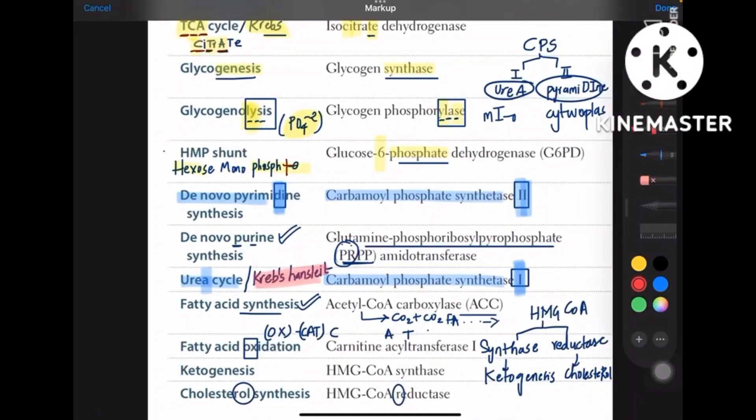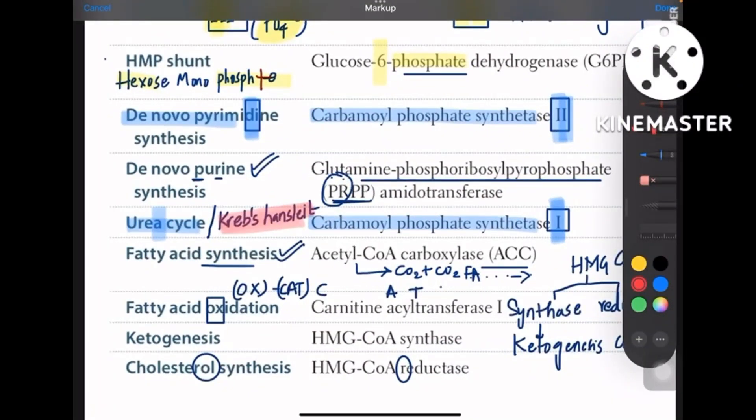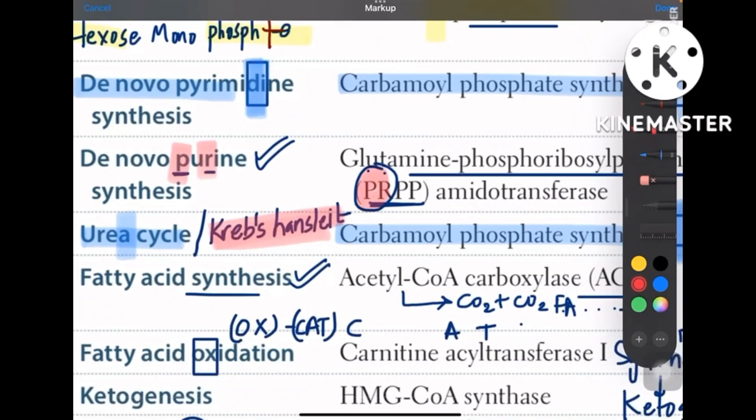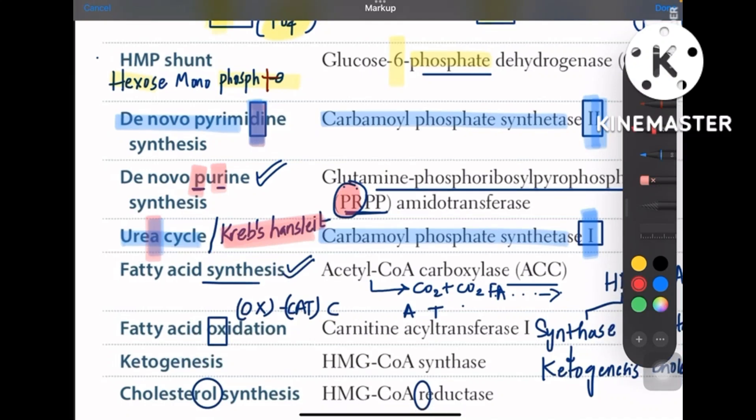Now coming to de novo purine synthesis guys, so purine name has P and R, so it's just PRPP, P and R. Don't confuse with pyrimidine's P and R, because pyrimidine is to be remembered with Krebs urea cycle, right, Krebs handset.